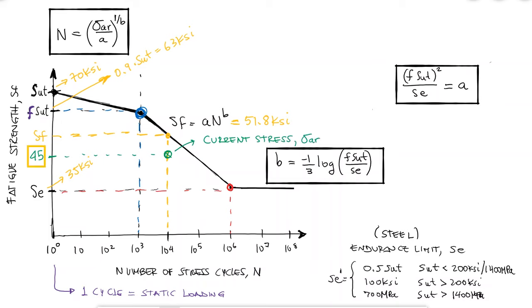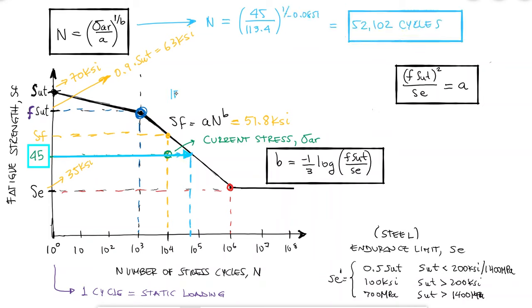Now, to answer the second question, I need to use the same equation and solve for N knowing that if the part is going to fail, the current completely reversed stress sigma AR needs to keep being applied until the fatigue strength drops to the same value. The part would therefore withstand 52,000 cycles of a 45 KSI stress would cause it to fail due to fatigue. Make sure to check the links in the video description below for other examples where we use the SN diagrams for fatigue failure calculations.